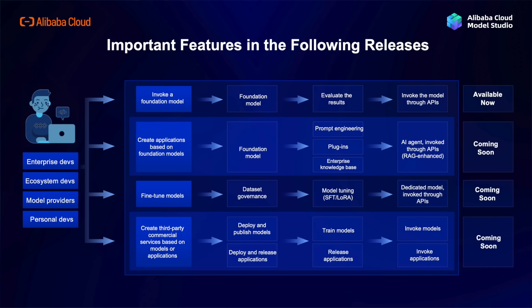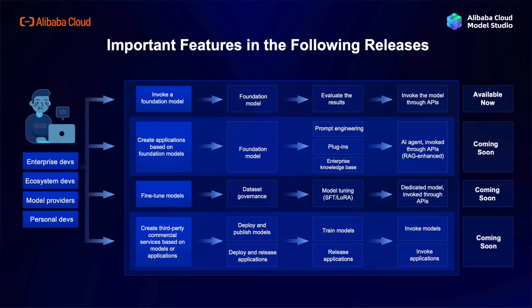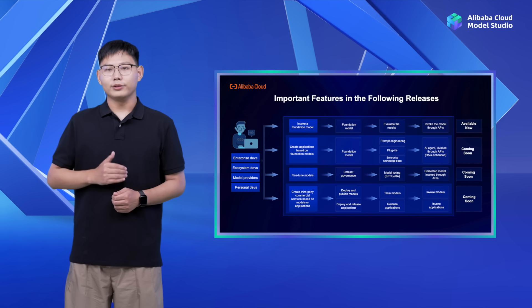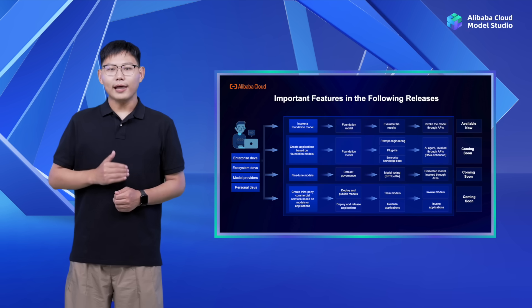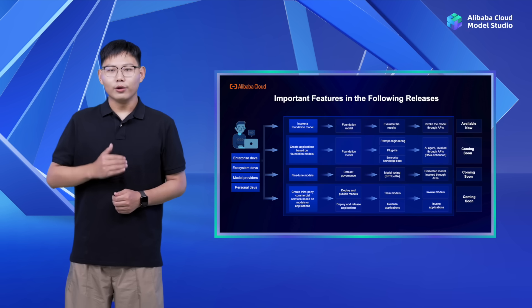In the future, we will continue to update our model list and bring more models. In terms of APIs, Alibaba Cloud Model Studio provides customers with complete, safe, easy-to-use, and highly-available API service. Developers and customers can use the API key and Workspace ID to ensure data security and call security. We provide a standard large-model inference protocol to reduce developer cost and migration cost, and the API service can selectively scale to ensure availability.